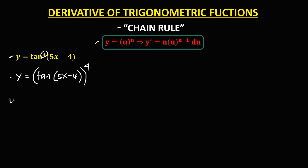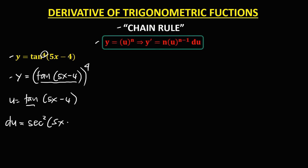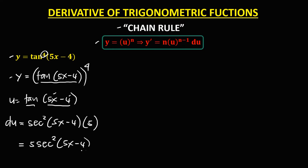From this given, u equals tangent of (5x minus 4). Then du, the derivative of u: since the derivative of tangent is secant squared, we have secant squared (5x minus 4) times the derivative of (5x minus 4). The derivative of 5x is 5, and the derivative of 4 is 0. So therefore, du equals 5·secant squared (5x minus 4).